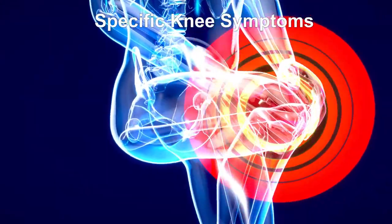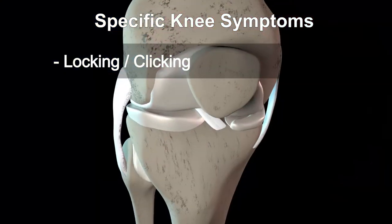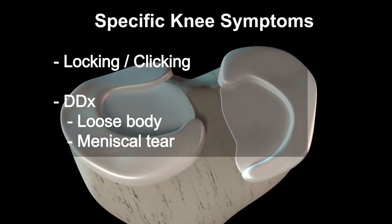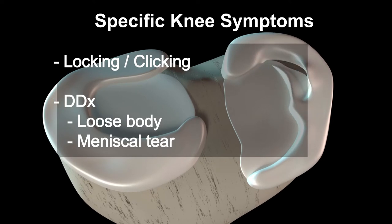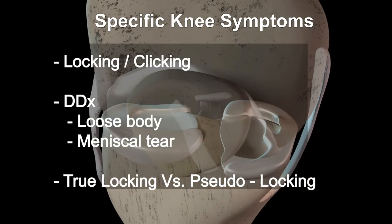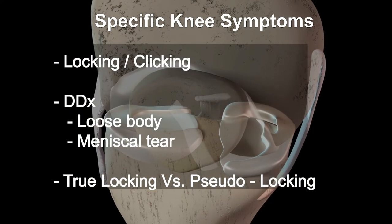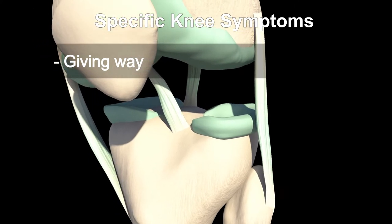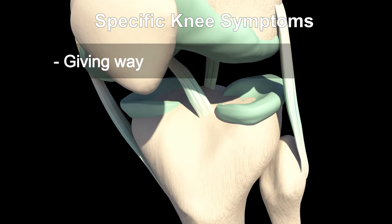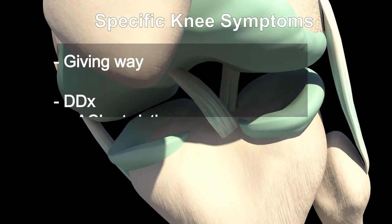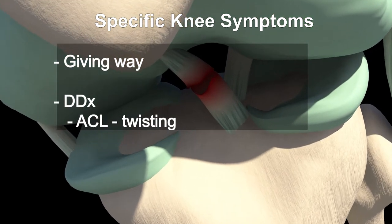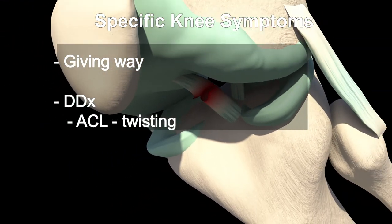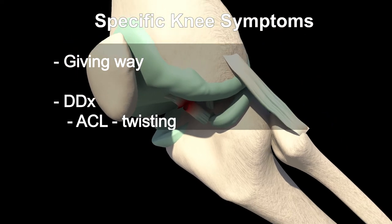Specific to the knee, inquire about locking or clicking, which may be suggestive of a loose body or meniscal tear — being cognisant that true locking versus pseudo-locking differ, representing intra-articular mechanical block or pain inhibition respectively. Additionally inquire about knee instability including giving way, which may represent ligamentous instability or pain. Anterior cruciate ligament injuries may occur during a twisting knee injury and manifest as giving way, particularly with difficulty with sideways or oblique movements.